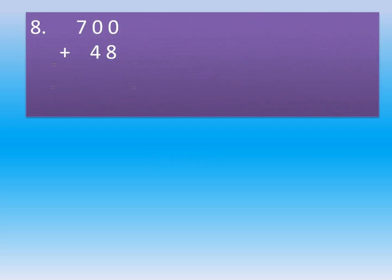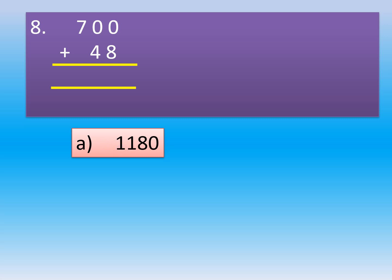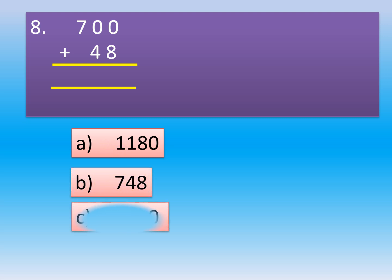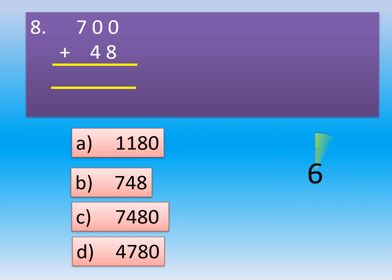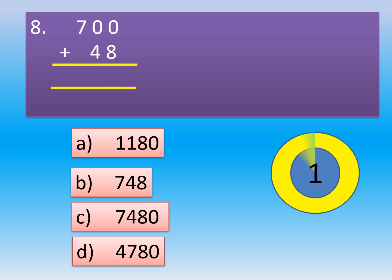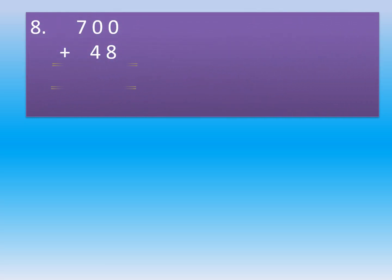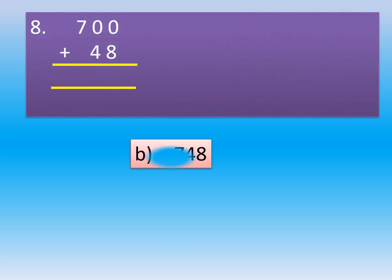Question 8: 700 plus 48 is equal to dash. Option A: 1180. Option B: 748. Option C: 7480. Option D: 4780. The correct option is Option B, 748.